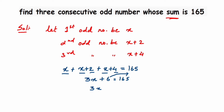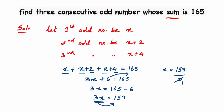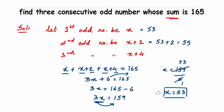Transposing 6 to the other side: 3x equals 165 minus 6, which gives 3x equals 159. Dividing both sides by 3: x equals 159 divided by 3, which equals 53. So the first odd number is 53, the second is x plus 2 equals 55, and the third is x plus 4 equals 57. The three consecutive odd numbers are 53, 55, and 57, and their sum is 165.